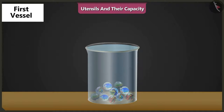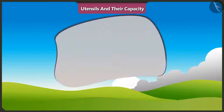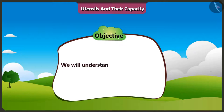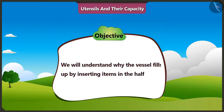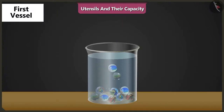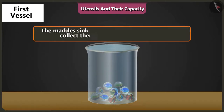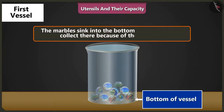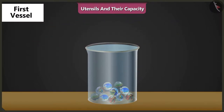Come on, I will explain. Today we will understand how the water level rises in a vessel when we drop objects in it. Mishtu, when we drop the marbles in a vessel half filled with water, the marbles sink to the bottom of the vessel and collect there due to their weight. As a result, the water comes up.